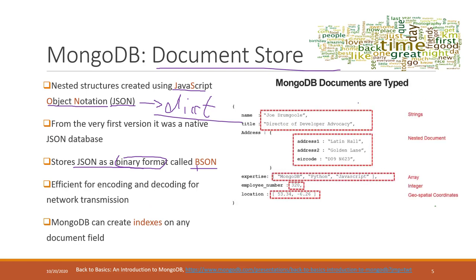Let's see one example. Here is one document — it is declared by a pair of curly brackets. Within those curly brackets, we have key-value pairs. The values can be strings. In this document, we have the first key-value pair, the second, third, fourth, fifth, and sixth — so we have six key-value pairs.